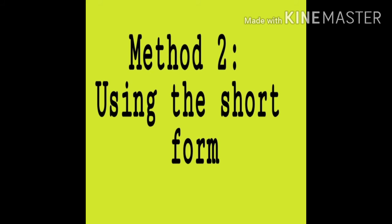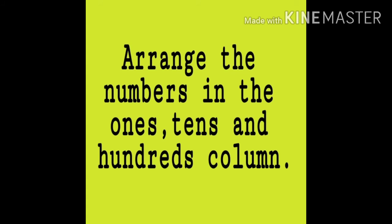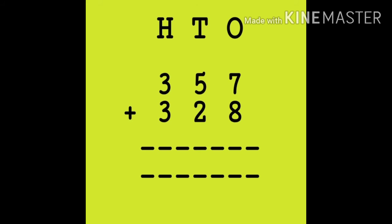I hope you have understood the first method using the expanded form. Now let's learn about the second method using the short form. First, we will arrange the numbers in the ones, tens, and hundreds columns, as we do with 2 digit and 3 digit numbers, carrying over 1 where needed.